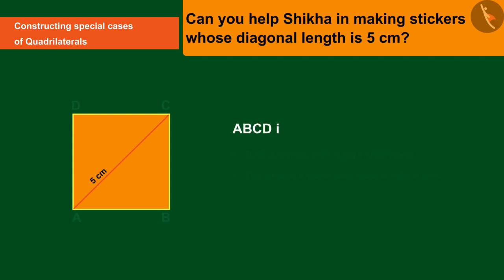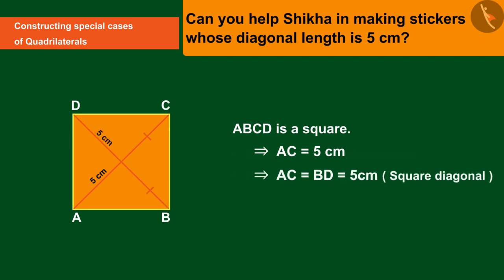Step 1. Suppose the square is ABCD. Diagonal AC equals five centimeters. As we know, both diagonals are equal in the square, so diagonal BD equals diagonal AC equals five centimeters.